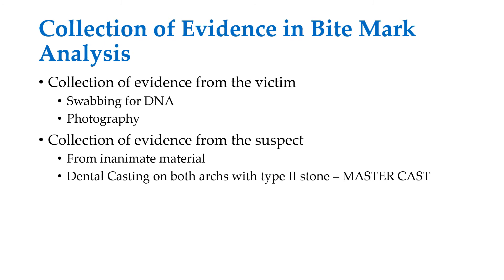Evidence collection in bite mark analysis involves two types: evidence from the victim and evidence from the suspect. From the victim, DNA swabs are collected from the site of the bite mark or from clothing. Clear images are taken by adjusting light properly, preferably positioning the camera at 90 degrees and taking pictures from various directions to capture all characteristics of the bite and teeth.